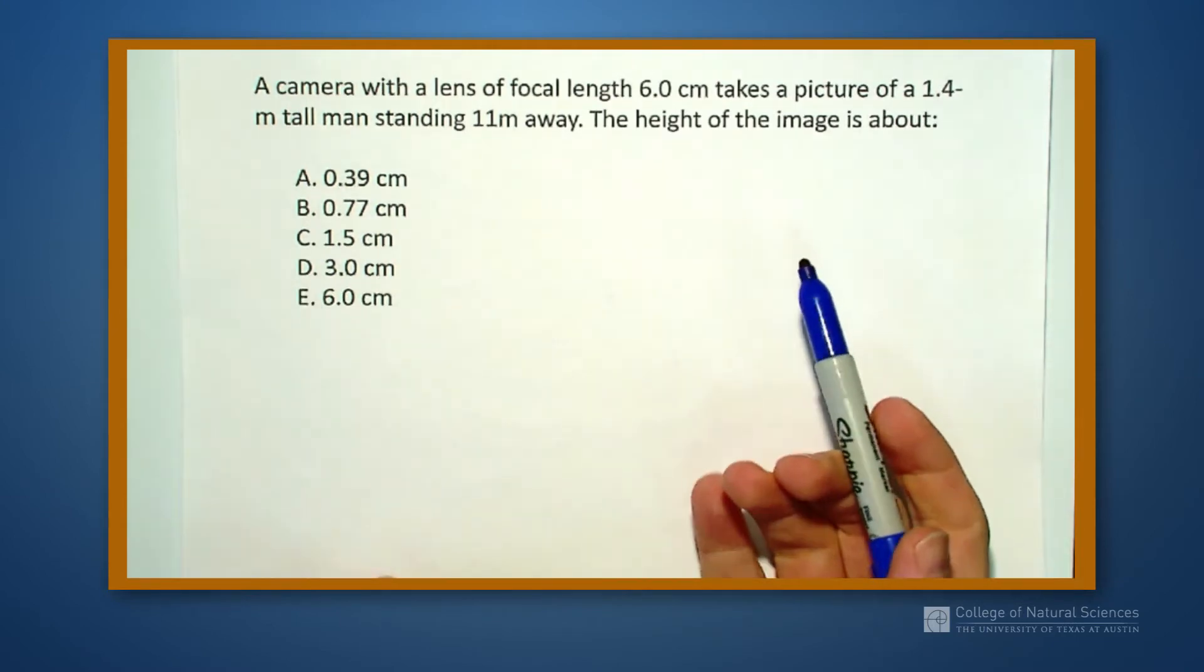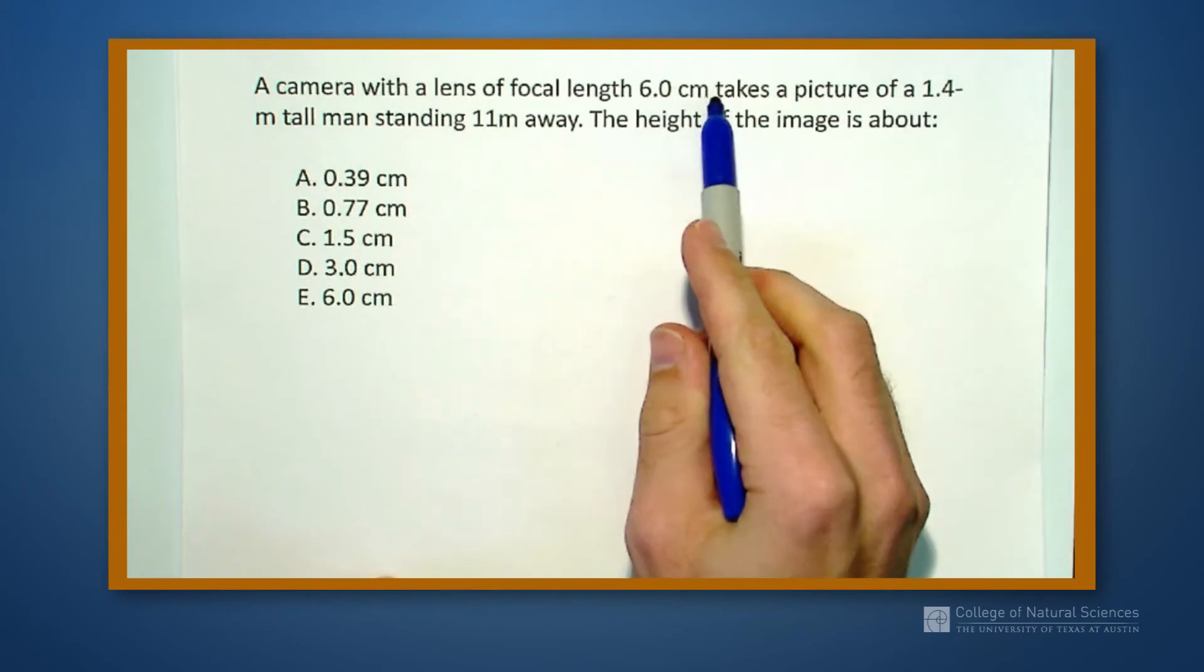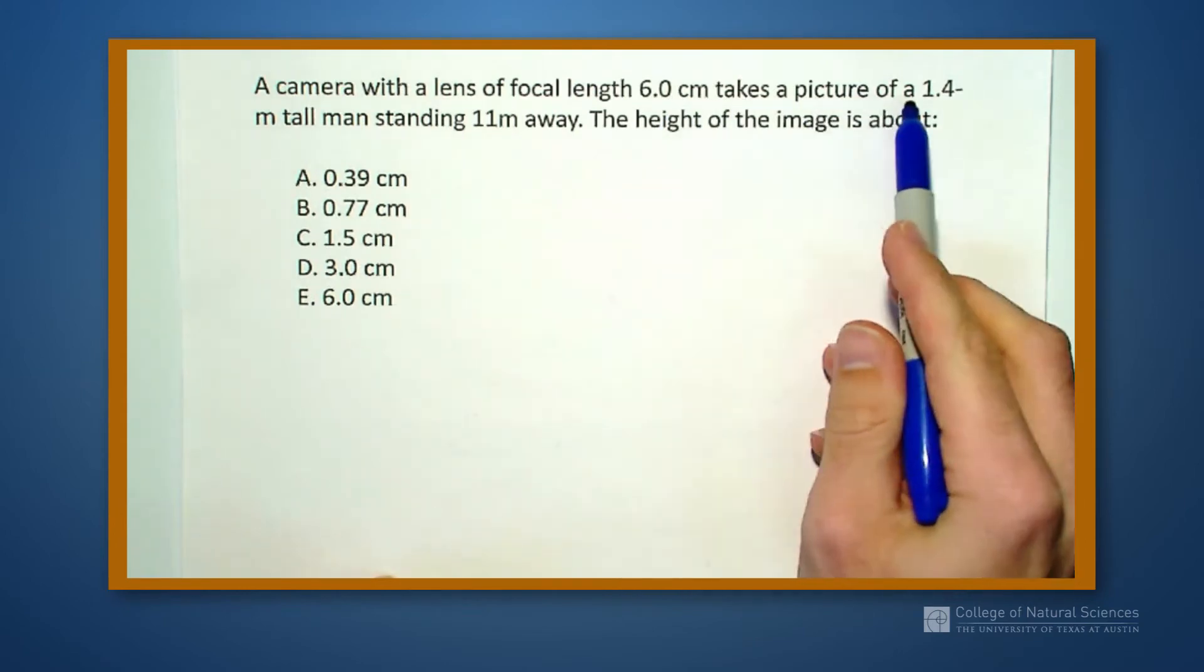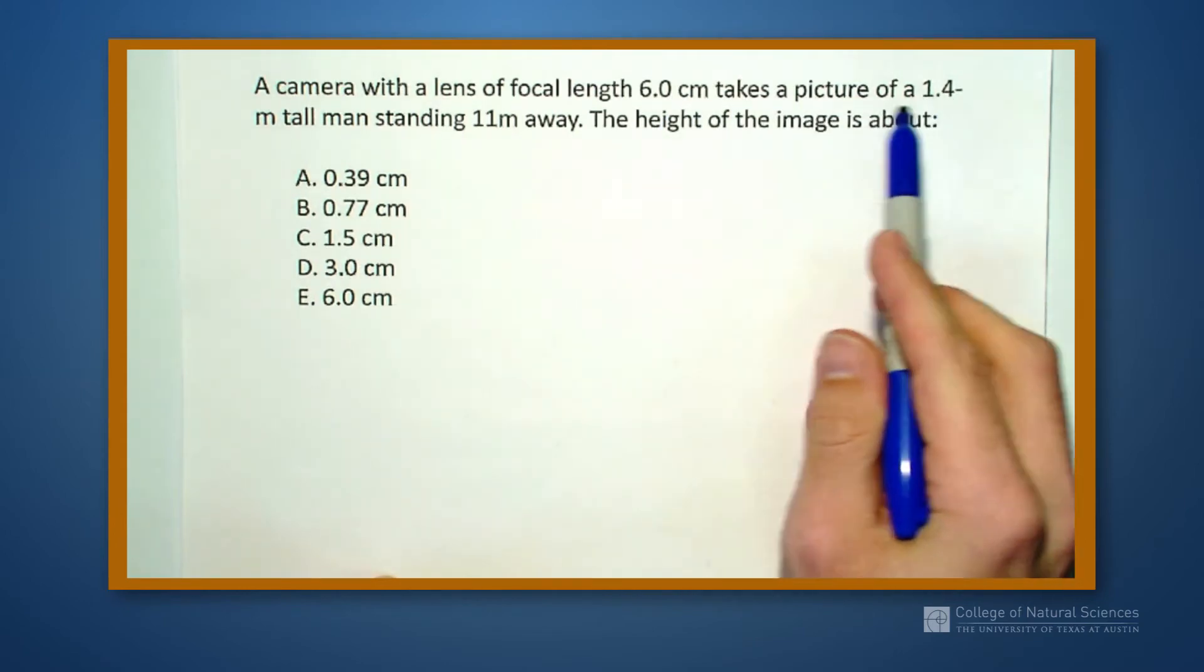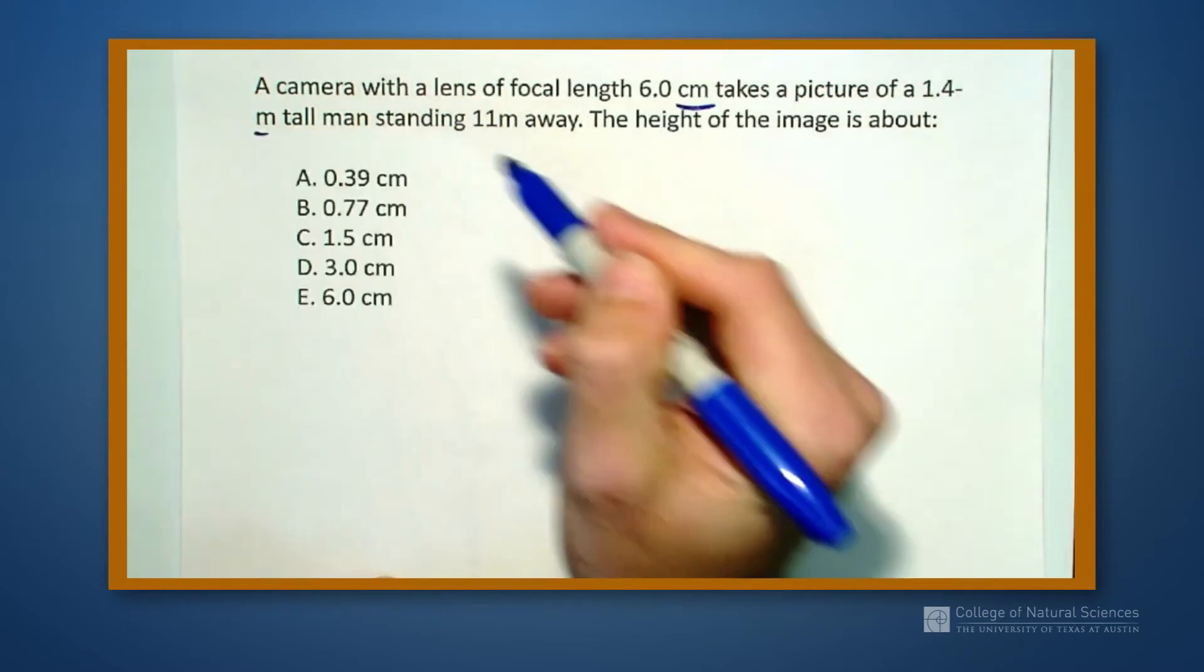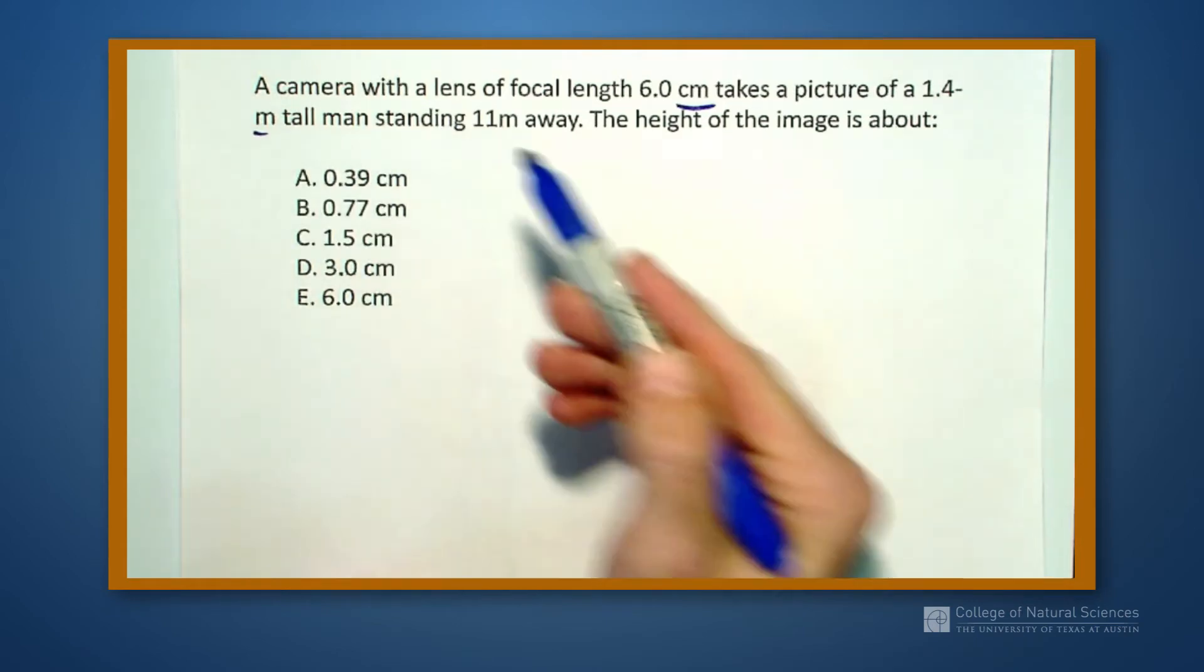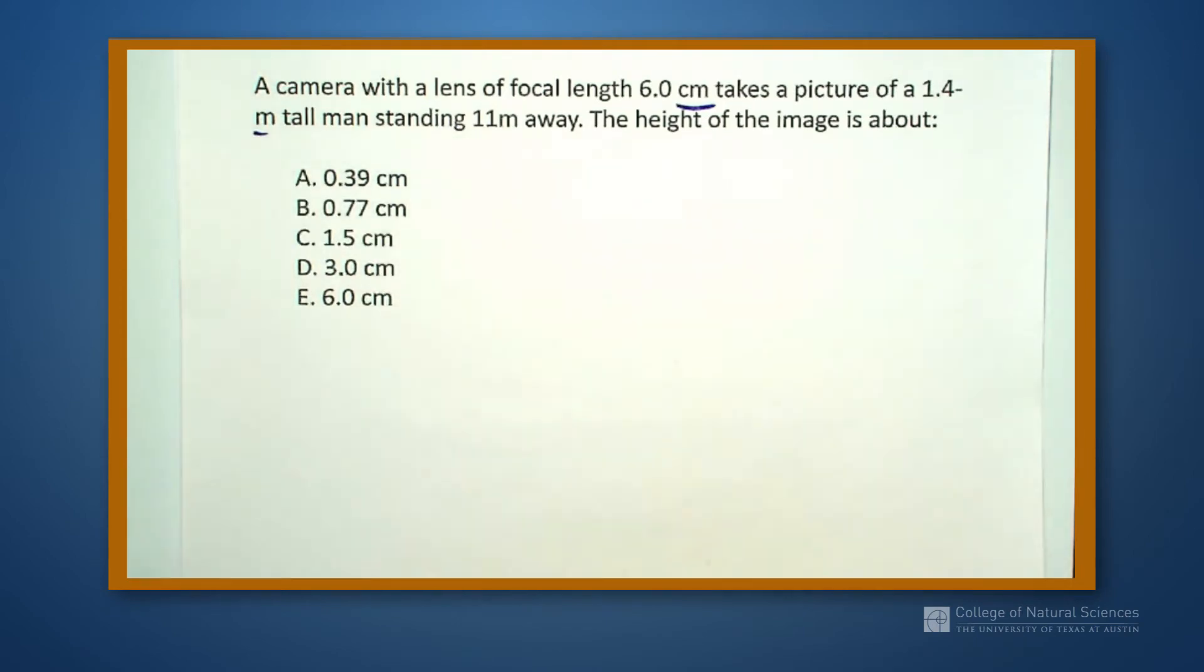Let's read this problem together. It says that we have a camera with a focal length, with a lens that has a focal length of 6 centimeters. It takes a picture of a 1.4 meter tall man standing 11 meters away. The height of the image is about what?